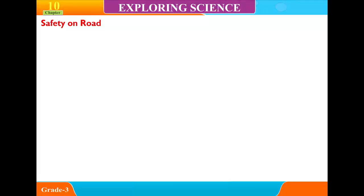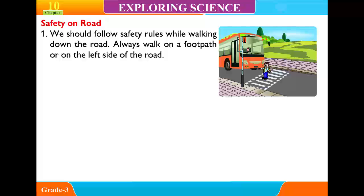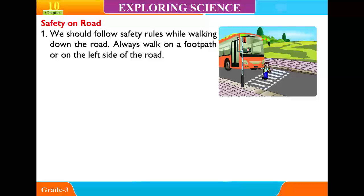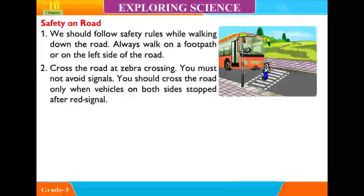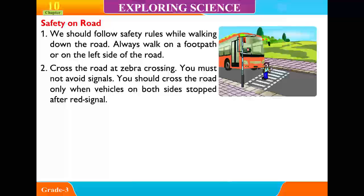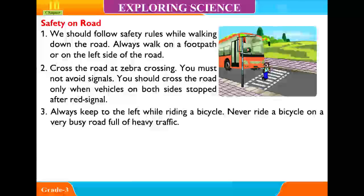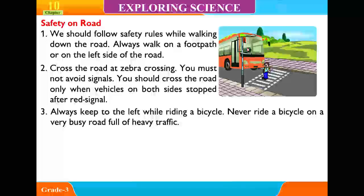Safety on road. 1. We should follow safety rules while walking on the road. Always walk on a footpath or on the left side of the road. 2. Cross the road at zebra crossing. You must not avoid signals. You should cross the road only when vehicles on both sides have stopped after a red signal. 3. Always keep to the left while riding a bicycle. Never ride a bicycle on a very busy road or in heavy traffic.